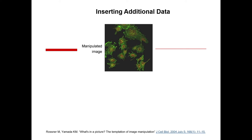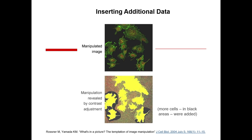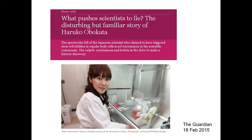Here's another example of image manipulation, published in a paper showing how one could potentially manipulate images and how one could capture that. The top image looks fine with these different cells. However, when you adjust the contrast, you can see areas where there was black around areas of yellow cells where there was clearly cutting and pasting going on.